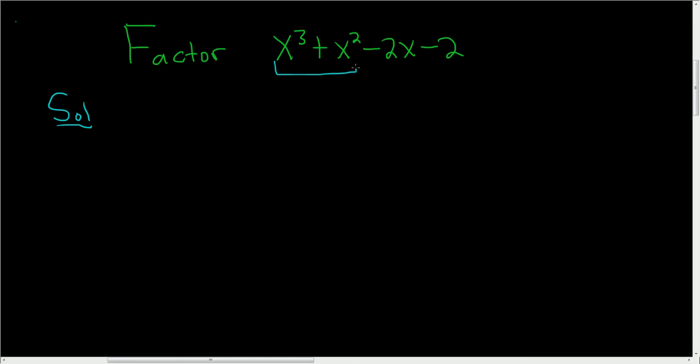You look at the first two terms and you factor out the greatest common factor. So in this case, that's x squared. To figure out what goes here, you ask yourself, what do you multiply by x squared in order to get x cubed? Well, x. And then what do you multiply by x squared in order to get x squared? Well, simply 1.